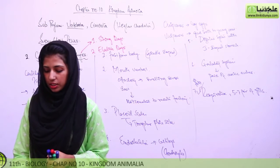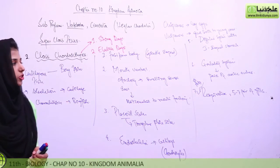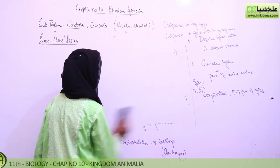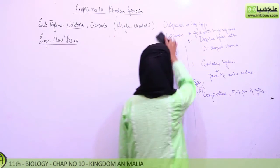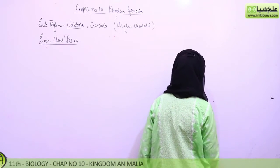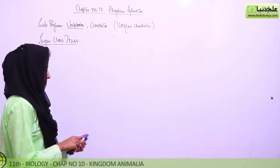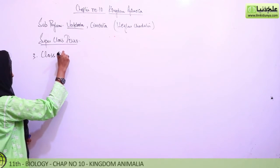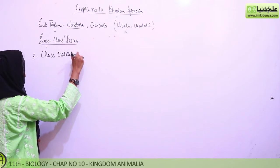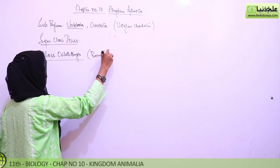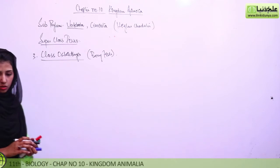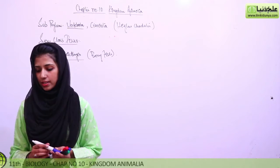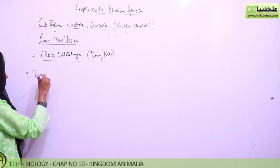This completes the class Chondrichthyes. Next class is bony fish (Osteichthyes). The bony skeleton replaces the cartilaginous skeleton. The first characteristic is that they have a bony endoskeleton.